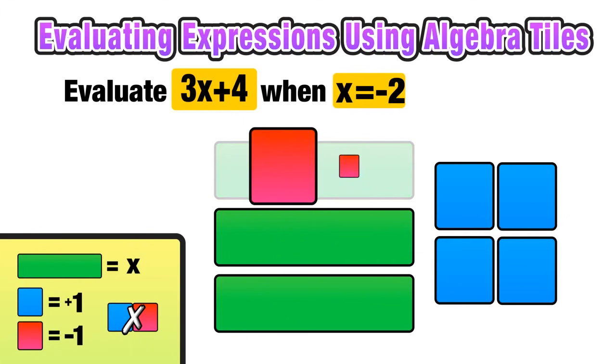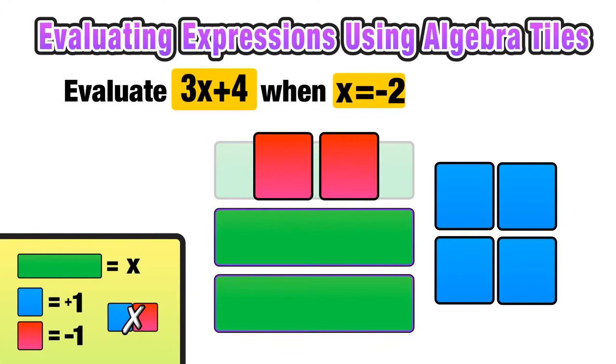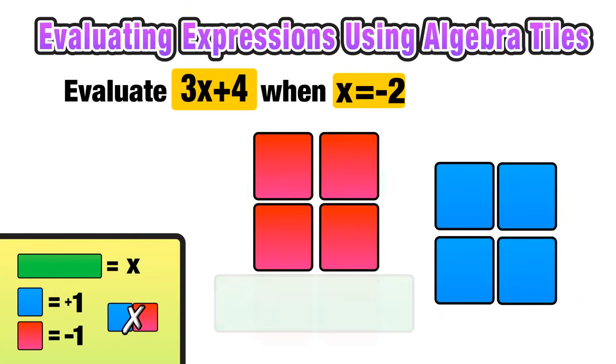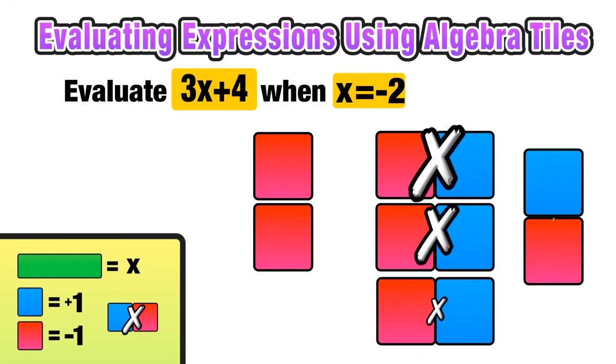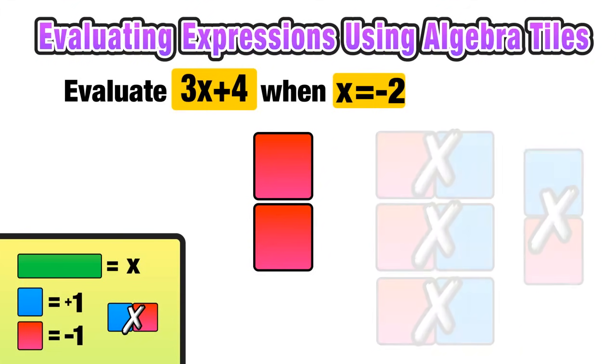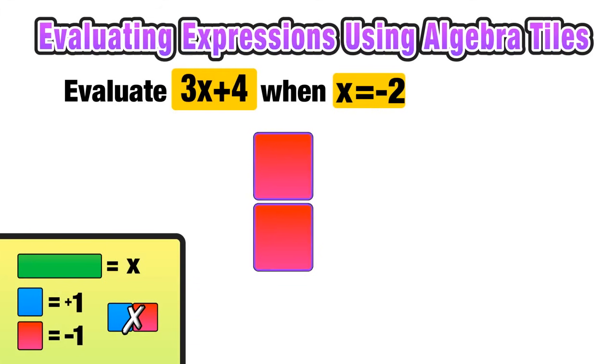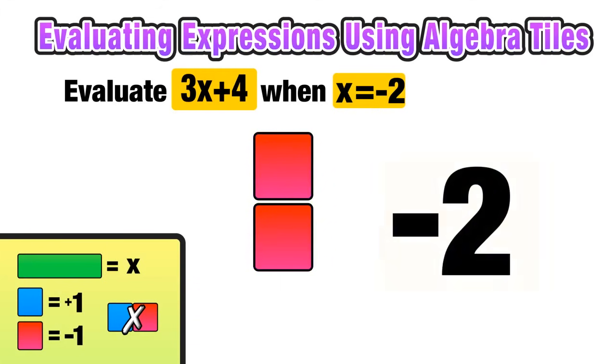So I want to replace each x with negative 2, or in this case 2 red squares. And I do this substitution with all 3 of the X's. And now we are ready to evaluate for this expression. We can go ahead and combine the red and blue squares because we know that they'll cancel each other out. So those disappear, put them off to the side, and what we are left with is 2 negative 1's, which we know is just negative 2. And we can conclude that the expression 3x plus 4 is equal to negative 2 when the value of x is equal to negative 2.